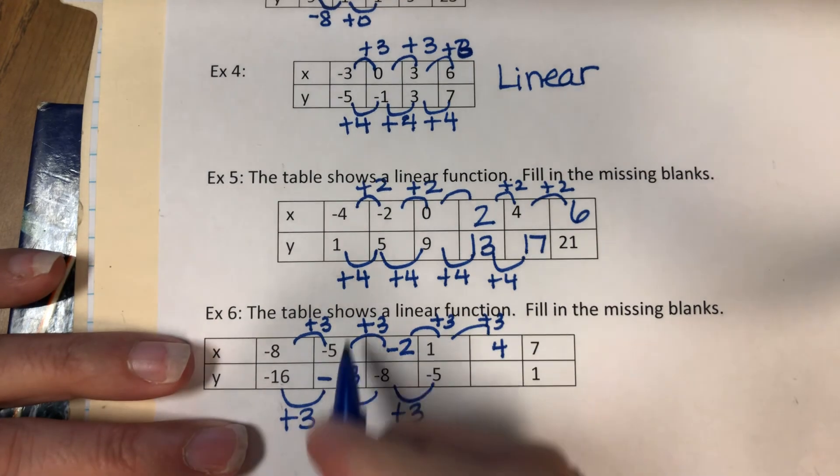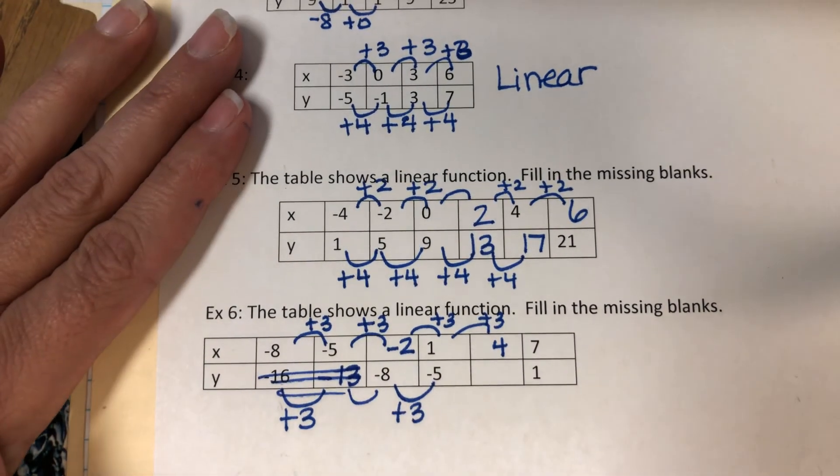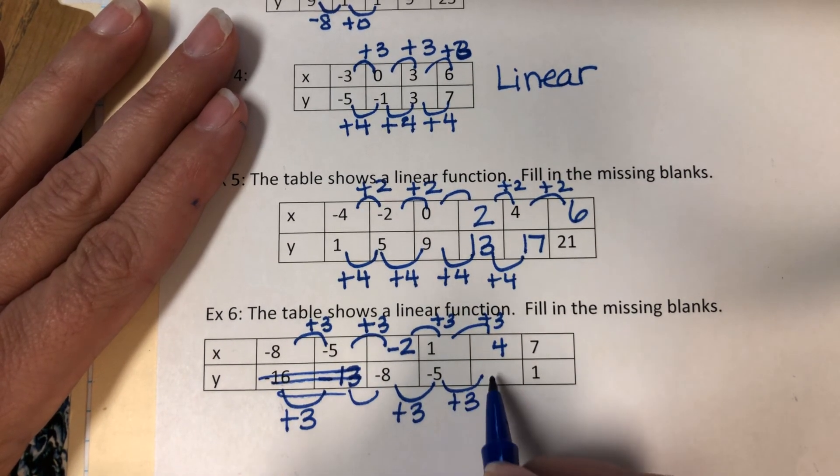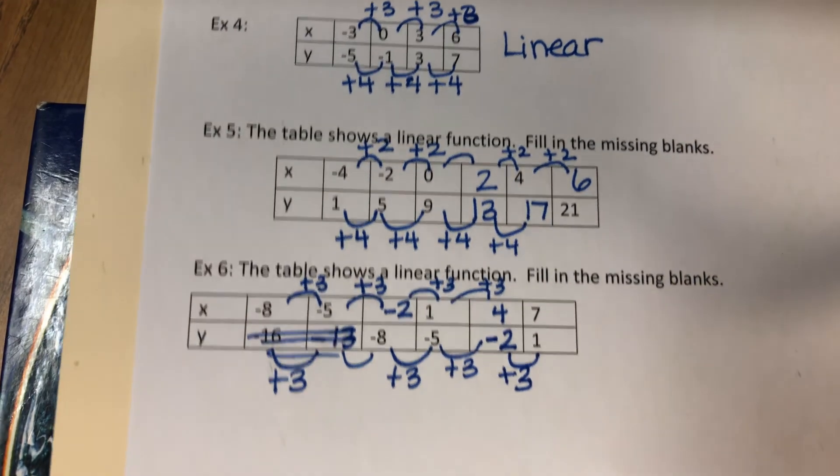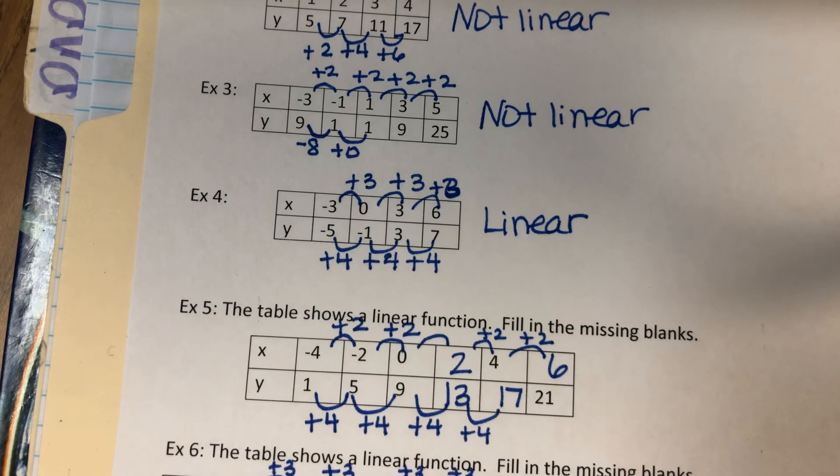We're going to forget about those first two and just go from negative 8, negative 5, and on. Sorry about that. So from negative 8 to negative 5, we add 3. So we add 3 to negative 5, and we get negative 2. We add 3 to negative 2, and we get 1. So that is what your assignment is today. You're going to be deciding if they're linear or not, and filling in the missing blanks.